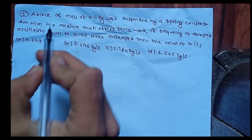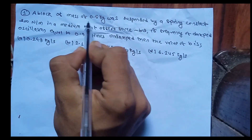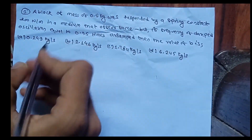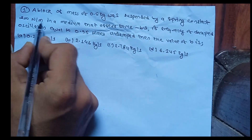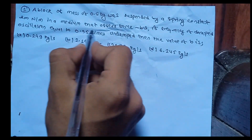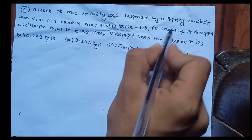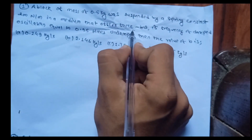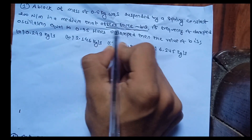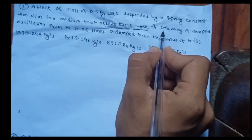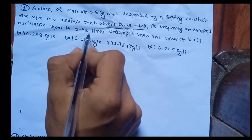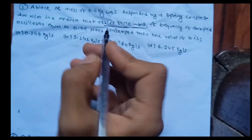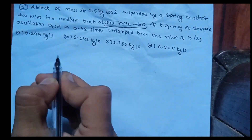A block of mass 0.5 kg is suspended by a spring with spring constant 200 newton per meter in a medium that offers a damping force of minus b*v. The frequency of damped oscillation is equal to 0.95 times the undamped oscillation frequency. Find the value of b.